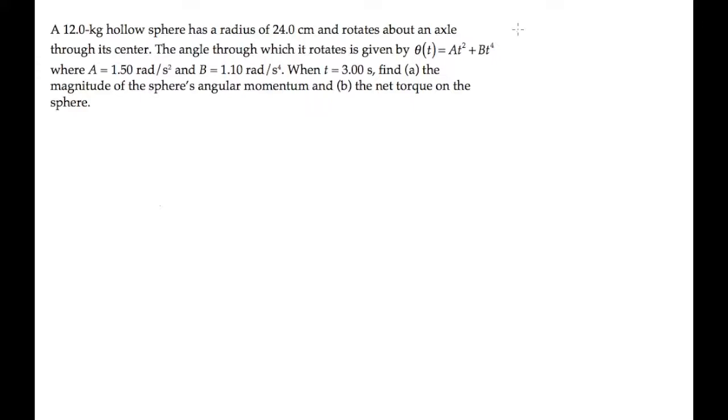Let's start solving this problem by calculating some numbers that will be useful as we go through it. First, we can find the moment of inertia for the hollow sphere. That equals two-thirds its mass times its radius squared. Substitute the sphere's mass and its radius, and calculate to see its moment of inertia is 0.461 kilogram meter squared.